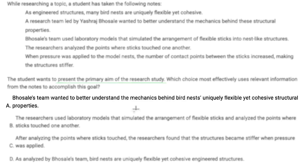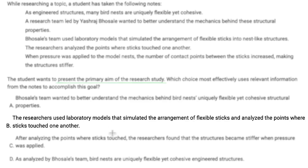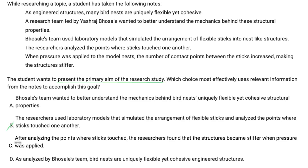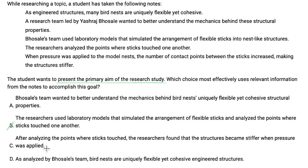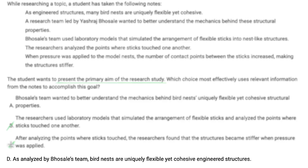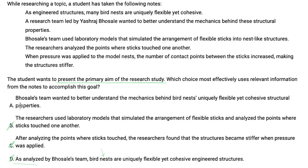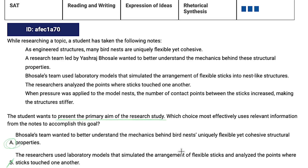Choice A: Bosali's team wanted to better understand the mechanics behind bird's nests. 'Wanted to better understand' — so this is an aim. I'm going to hold on to it. Choice B: the researchers used laboratory models that simulated the arrangement of flexible sticks and analyzed points. This is telling me what they did, not what their aim was. So B is out. Choice C: after analyzing, they found that — this is actually a conclusion, not an aim. So C is not my answer. Choice D: analyzed that bird nests are uniquely flexible — again, that's a conclusion. So D is out. Even though this is rated as a hard question, I got my answer A pretty easily.